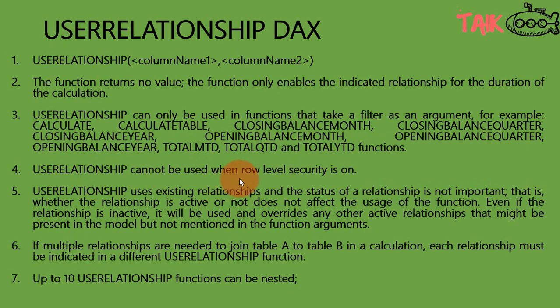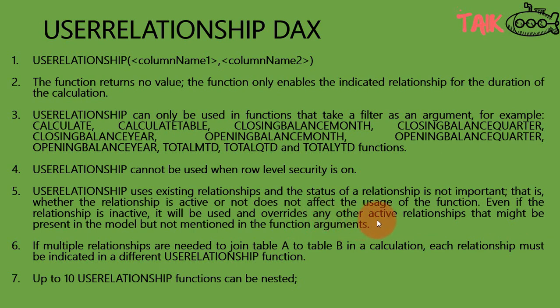USERELATIONSHIP cannot be used when there is row-level security enabled on the Power BI file. USERELATIONSHIP uses existing relationships and the status of a relationship is not important — whether the relationship is active or not does not affect the usage of the function. Even if the relationship is inactive, it will be used and overrides any other active relationship that might be present in the model but not mentioned in the function's arguments.